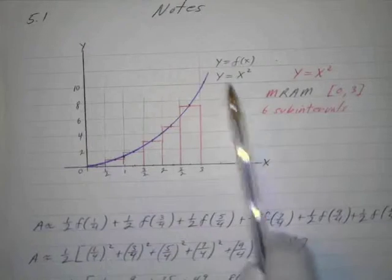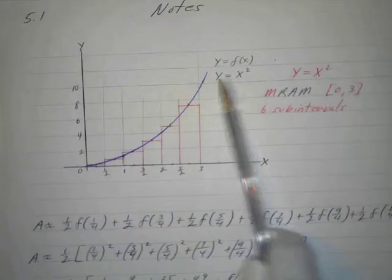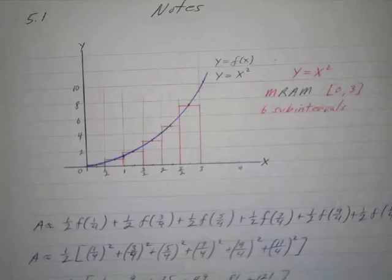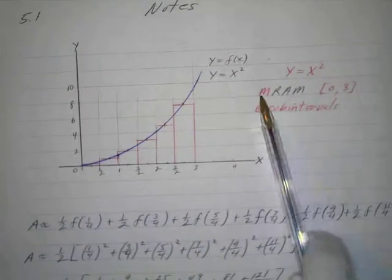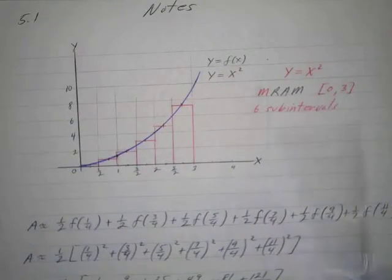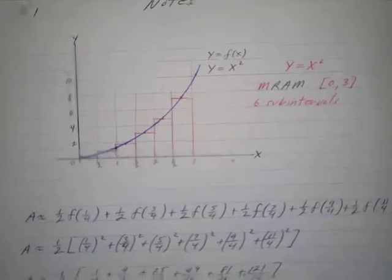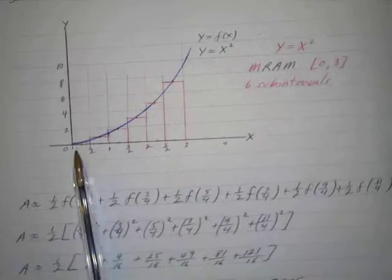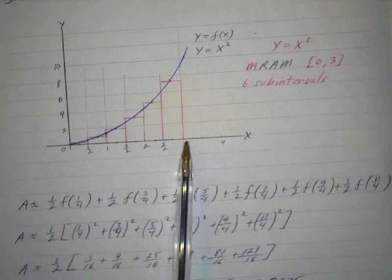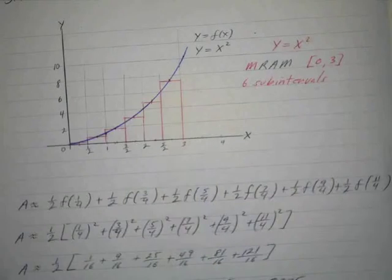Again, we've got our same f(x) equals x squared. It's our same parabola and again we're going to do MRAM on the interval from zero to three and we're going to use six subintervals. You'll always be given this data when you're doing these calculations. The base of each of these rectangles will be one half because if I divide three by six I get one half.